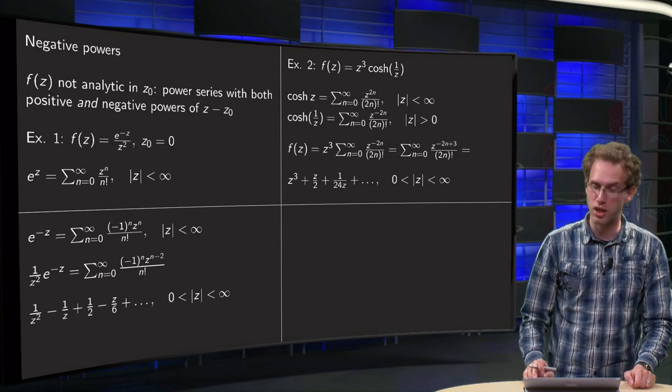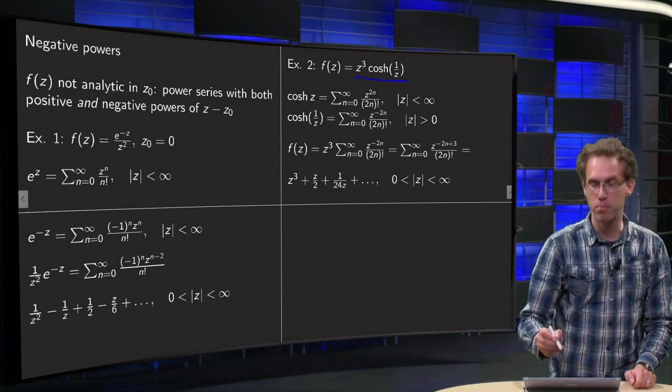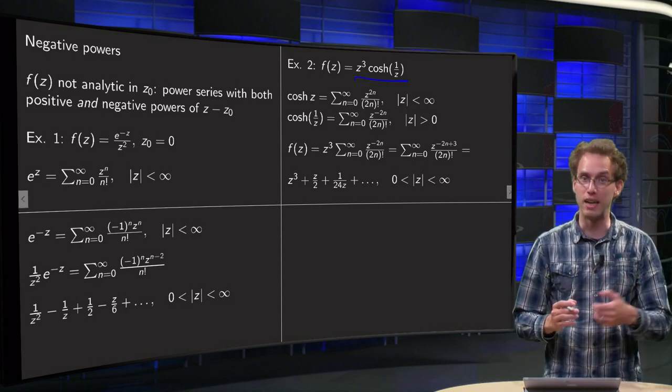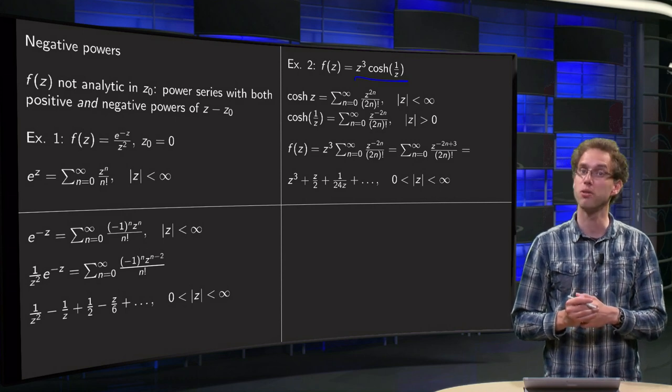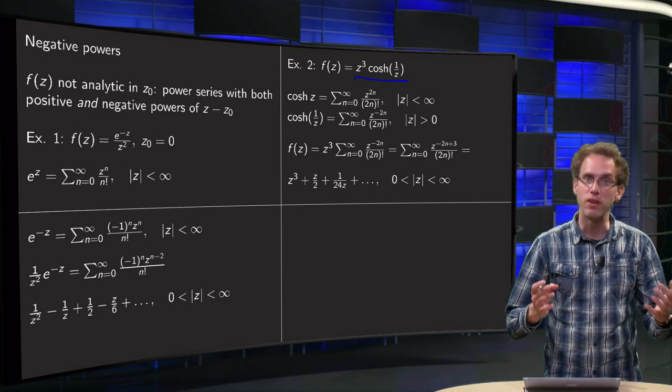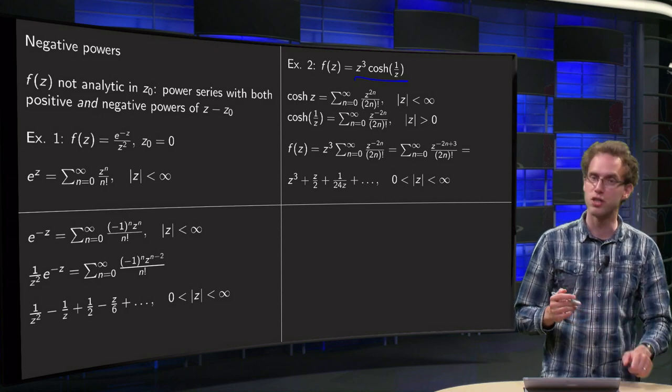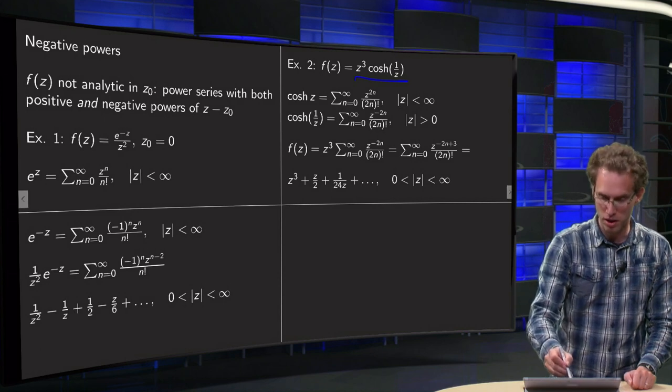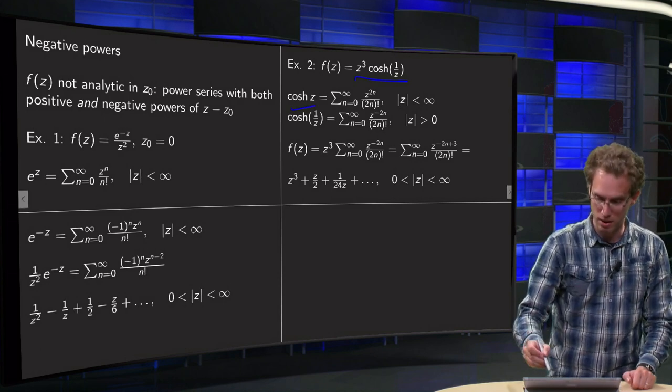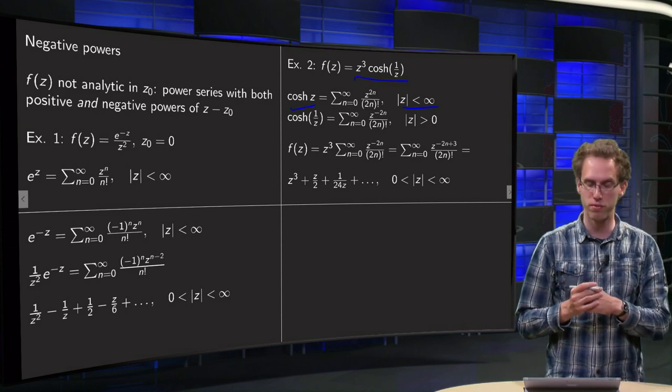So let's do another example. Z cubed times the cosine hyperbolic of 1 over z. Again a problem of course in z equals zero. It is not even defined over there. But let's see whether we can form a power series in an annulus around zero. So what do we know? We know cosine hyperbolic of z converging everywhere. And we have a z to the power 2n divided by 2n factorial.